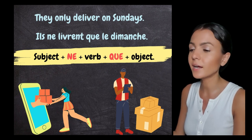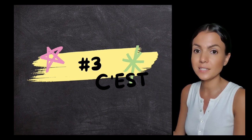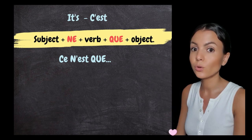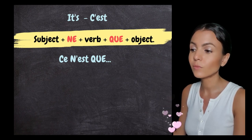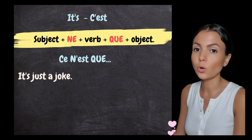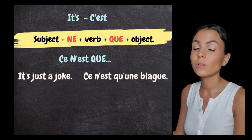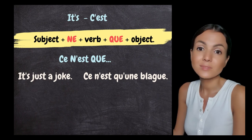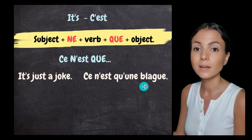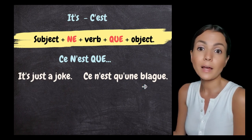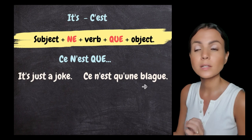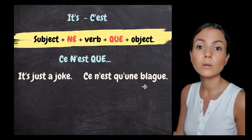Case number three. 'Ça' becomes 'ce', so 'ce n'est que' means 'it's just' or 'it's only'. For example, 'it's just a joke' → 'ce n'est qu'une blague'. By the way, in spoken French you can skip the 'ne' — so you might say 'c'est qu'une blague' instead.